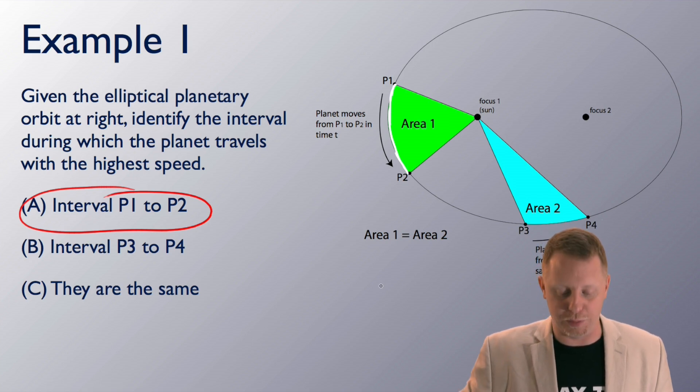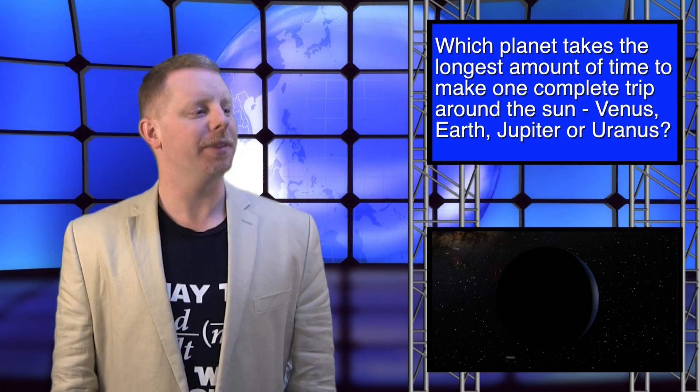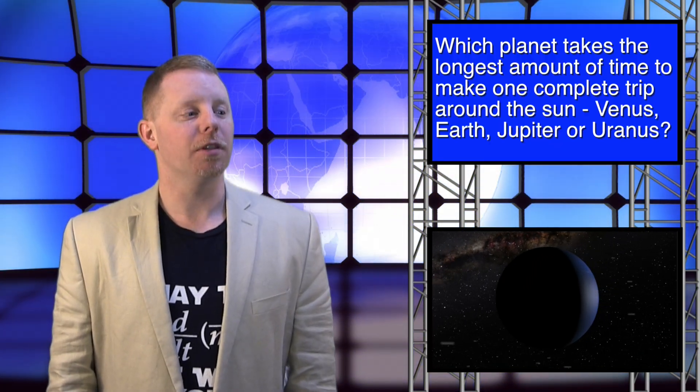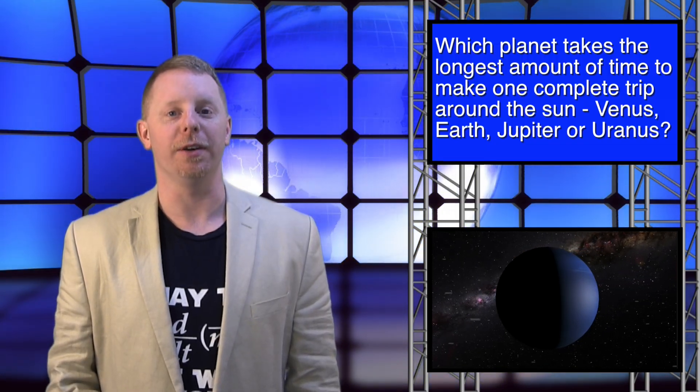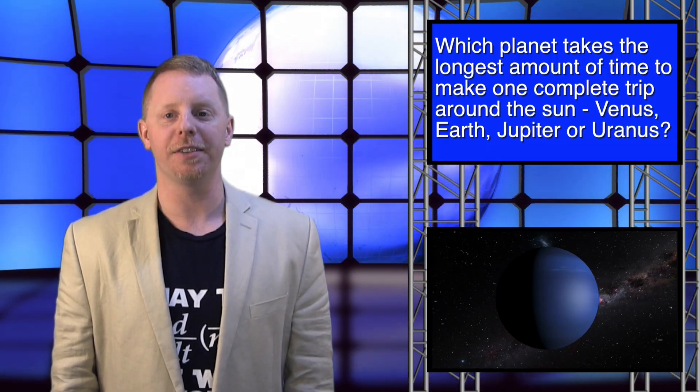Alright, let's take a look at another example. Example 2. Which planet takes the longest amount of time to make one complete revolution around the sun? Well, we know from Kepler's laws that the closer the planets are to the sun, the smaller their period, the faster their orbit. So, which is going to take the longest amount of time to complete one revolution around the sun? The one with the longest period is going to be the one that's the farthest from the sun. So, the correct answer here would be D, Uranus.